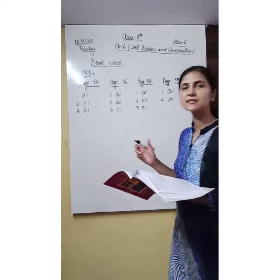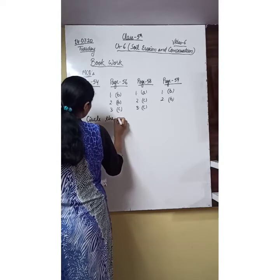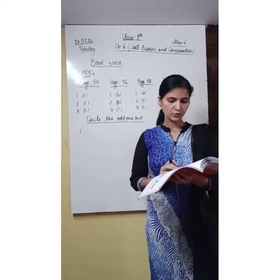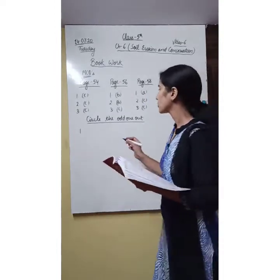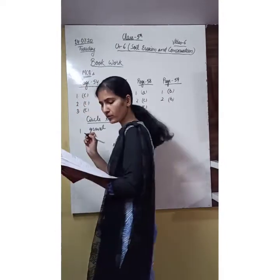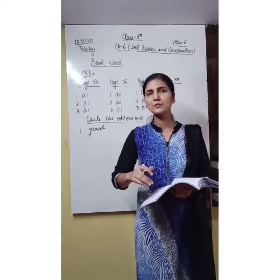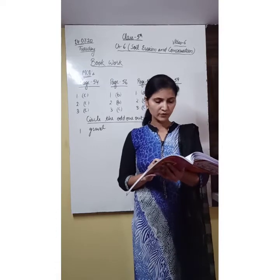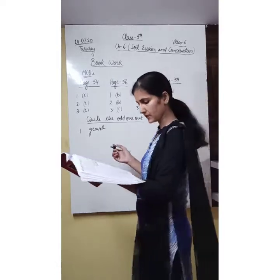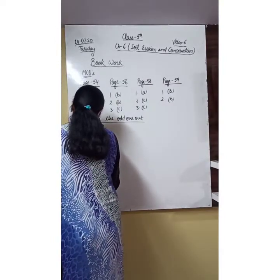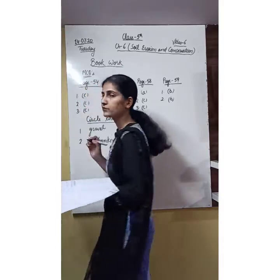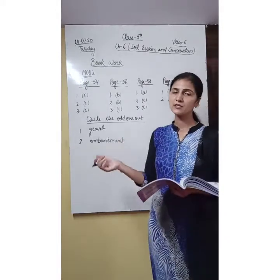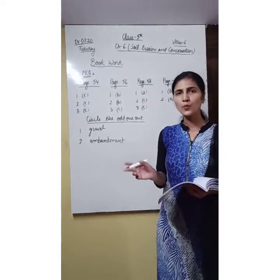Now it's time to discuss the odd-one-out. First one: topsoil, subsoil, gravel — the answer will be gravel. Because topsoil and subsoil are layers of the soil that make up the soil profile, but gravel is a composition component present within the soil. Next: strong wind, embankments, overgrazing — the answer will be embankment. Because strong wind and overgrazing cause soil erosion, but embankments cause soil conservation. These two are opposite processes.